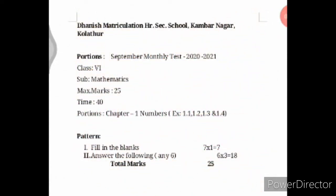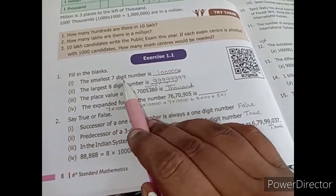Good morning students. For the September monthly test, we are going to have it for 25 marks. We have already done a revision video on YouTube, but in this video we are going to concentrate only on the portion of the unit test — that is chapter 1, exercise 1.1 to 1.4. The pattern is fill in the blanks for 7 marks, answer any 6 out of 8 questions each carrying 3 marks, totaling 18 marks, and overall 25 marks. We will go with the revision session, starting with exercise 1.1.